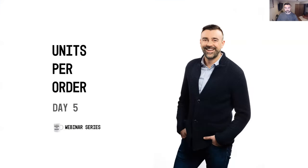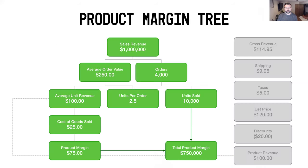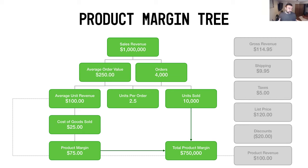So if you recall last lesson, we talked about the product margin tree and we've been stepping our way through it. We started at the top where we looked at all the sales revenue and how that breaks down to average order value, orders, units, average unit revenue, and units per order in the middle. We also have cost of goods sold and product margin, and the sister order margin tree we'll get into in a few other lessons.